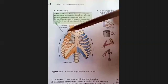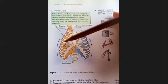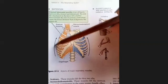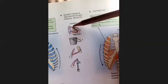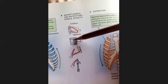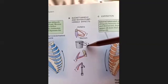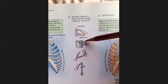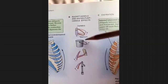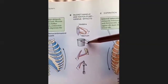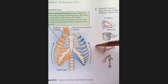Your external intercostals are running forward, so when they contract, they will lift the ribcage up and ribs will show a bucket handle movement. Just like a bucket — when you lift the handle upward, it goes outward and slightly upward as well. The movement of ribs is like this bucket handle movement, and that increases the lateral diameter of the chest.